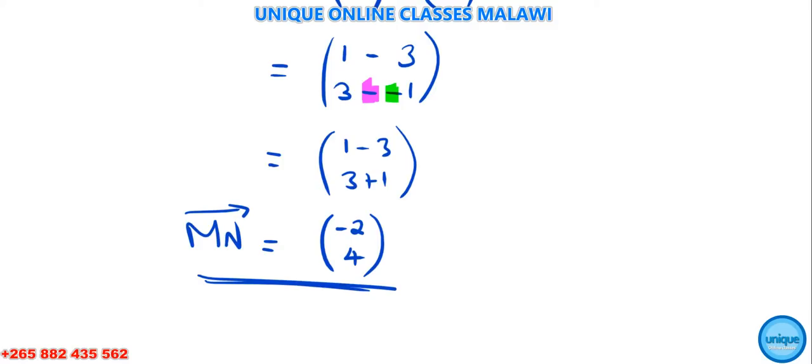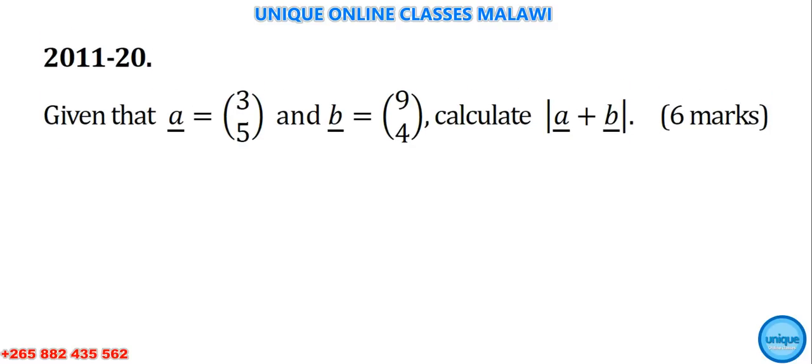Let's now move on to another question. Given that a equals (3, 5) and b equals (9, 4), calculate the distance between these two vectors. This was worth 6 marks, question number 20, 2011. Solution: We need to find |a + b|.